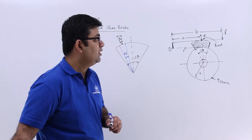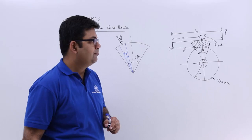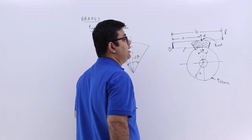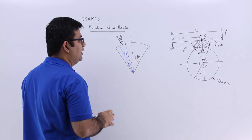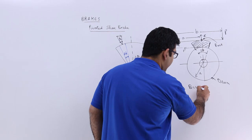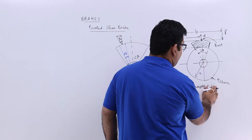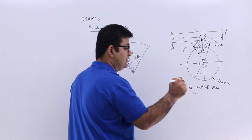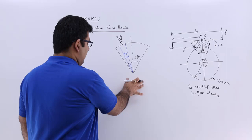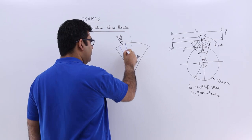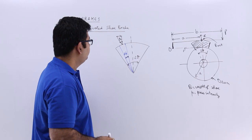This is the lever, this is the point of force, this is the point of action of normal reaction, and this is the force of friction. Now let's take this shoe over here. Capital B is the width of the shoe. Small p is the intensity of pressure on the shoe, which is the pressure intensity. I've taken this element making an angle d phi — not d theta but d phi — at the center.